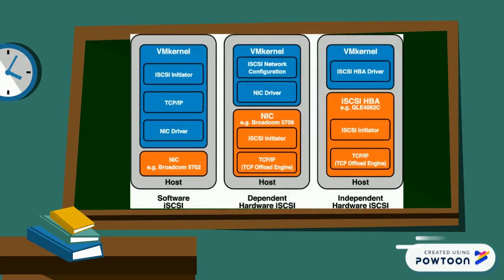If you look at the iSCSI-HBA, it has two planes: control plane and data plane. The control plane takes care of your control policies, while the data plane takes care of data processing. In the Software iSCSI-HBA, both the control plane and data plane sit in the VM Kernel itself.